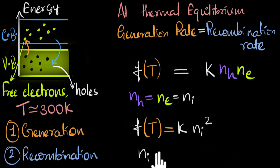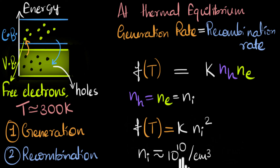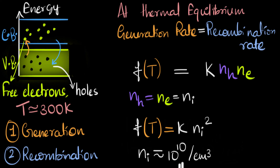It turns out that if you calculate the number of electrons and holes at room temperature for silicon, that value is roughly 10^10 per centimeter cubed. When I first saw this, I thought that's a lot of electrons and holes — why do we call it a semiconductor and not a conductor? That's 10 billion electrons and holes per centimeter cubed.